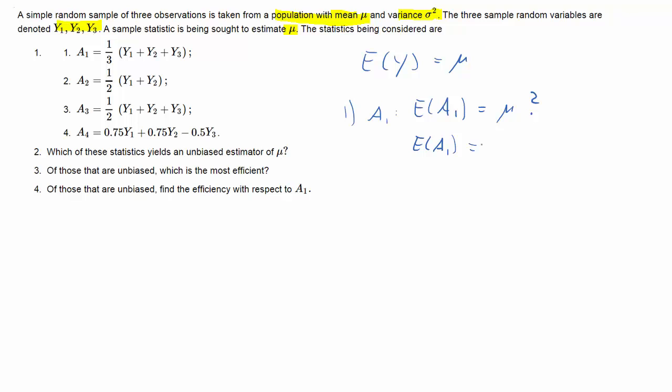So A1, the expected value of A1 is nothing else but the sum of the expected values of y1 to y3 and then multiplied with 1 over 3 as we have that factor in front. Now as these three random variables are drawn independently they all have the same expected value mu and therefore this simplifies to 1 over 3 times 3 mu which is just mu and hence means that A1 is unbiased.